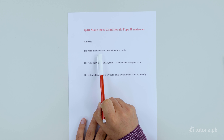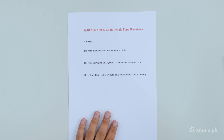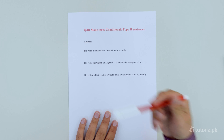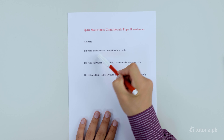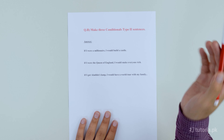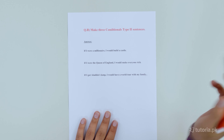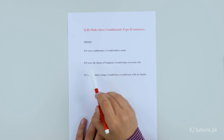Agar mein millionaire hota, agar mein bohat zyada ameer hota — it means that in reality there is no possibility, because I am not.